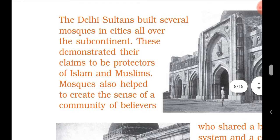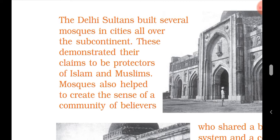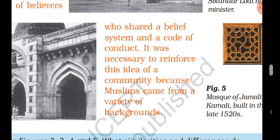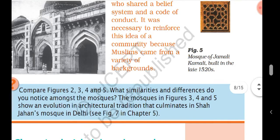The Delhi Sultans built several mosques in cities all over the subcontinent, which demonstrated their claim to be protectors of Islam and of Muslims. These mosques also helped create a sense of a community of believers who shared a belief system and a code of conduct. It was necessary to reinforce the idea of community among Muslims coming from a variety of backgrounds.